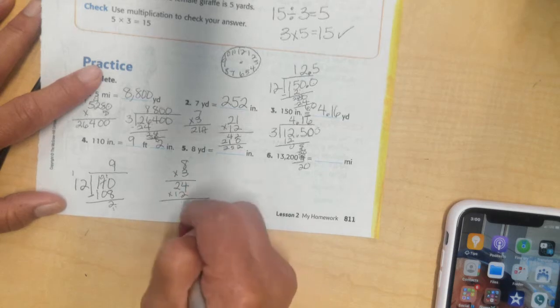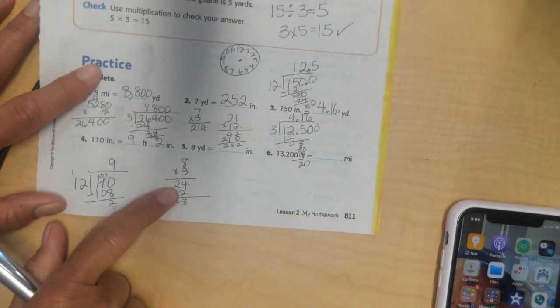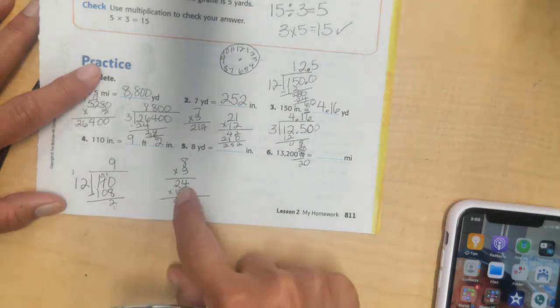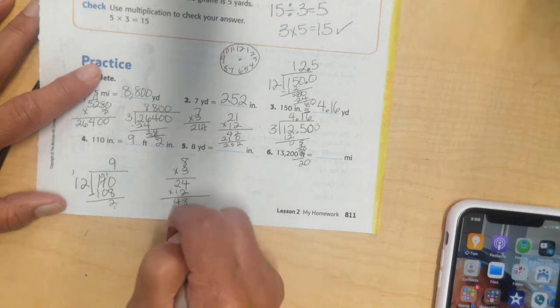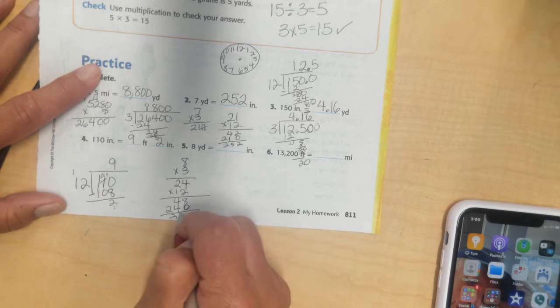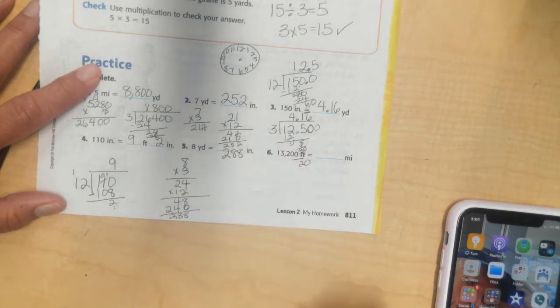I'm going to have 4 times 2 is 8. And 2 times 2 is 4. So, I multiplied the numbers in the ones place. Now, I'm going to multiply the numbers in the tens place. I'm going to put a 0 in my ones place so I know not to put any numbers in there. 4 times 1 is 4. And 2 times 1 is 2. I add these together. I have 288 inches in 8 yards.